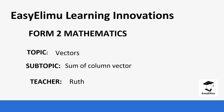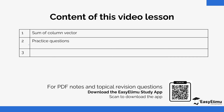Welcome to Easy Aleem Learning Simplified. My name is Ruth and today we are going to be learning from Year Two Mathematics. Our topic is vectors and our subtopic is sum of column vectors. In the previous lesson we were able to identify what a column vector is and use a graph to represent it. We talked about the x-coordinate and the y-coordinate and how we determine if it's positive or negative depending on the direction we take.